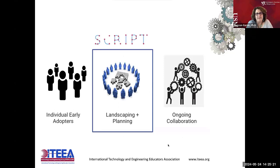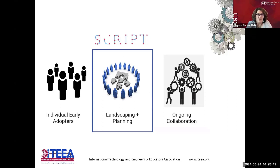We realized that early on there are teachers who go through professional development such as Excite2 and become early adopters, and then are able to have high quality computer science courses going to select students who take that particular course or in their sections. We know that we need to do more landscaping and planning in order to have more of our teachers be able to deliver these types of courses and have ongoing collaboration between stakeholders.